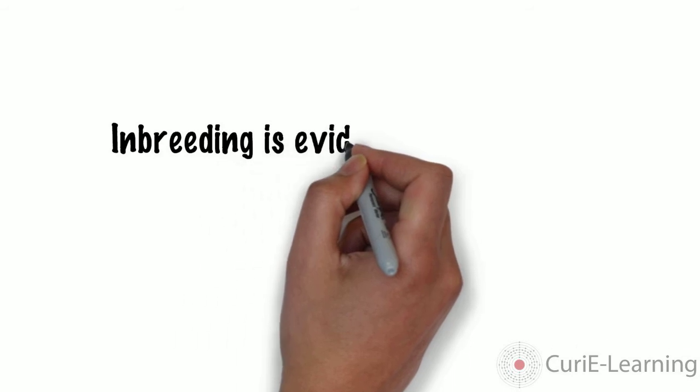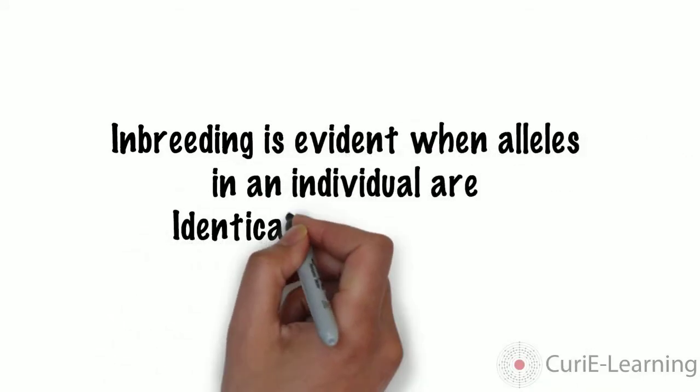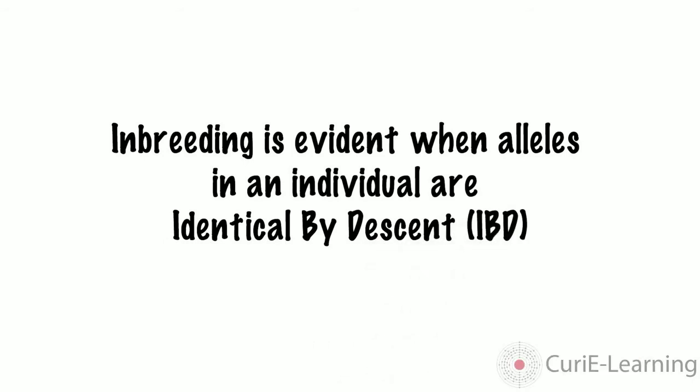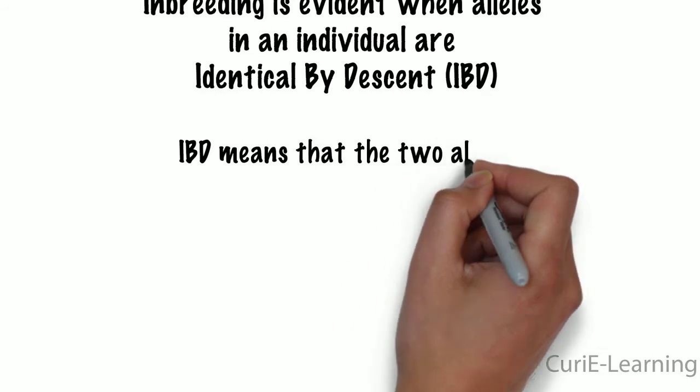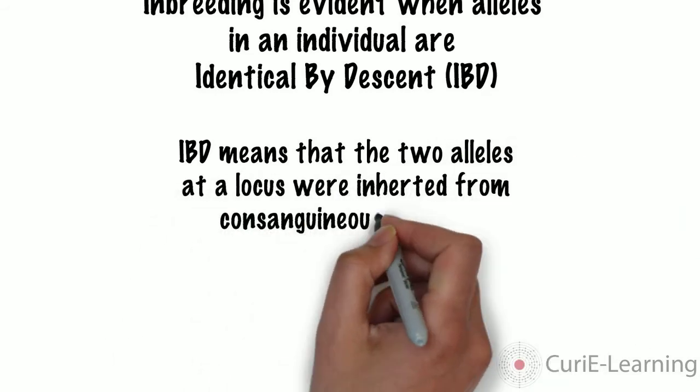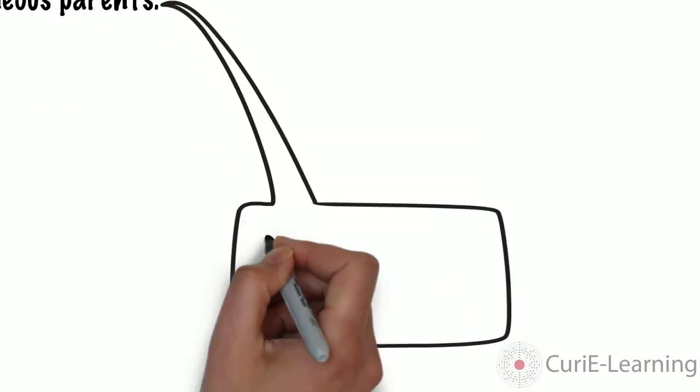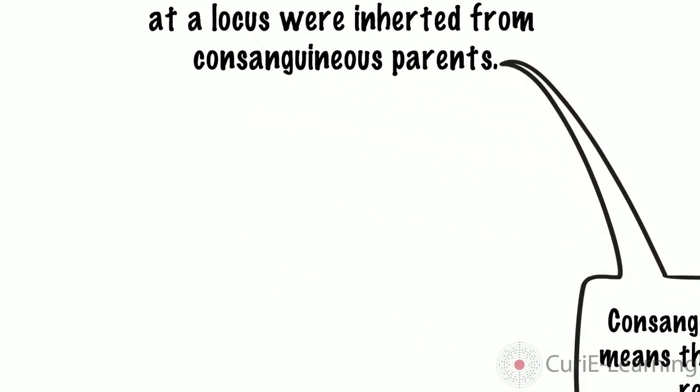Inbreeding is evident when alleles in an individual are identical by descent. Identical by descent means that the two alleles at a locus were inherited from consanguineous parents. Consanguineous just means that they share a recent common ancestor, so in other words they're related.